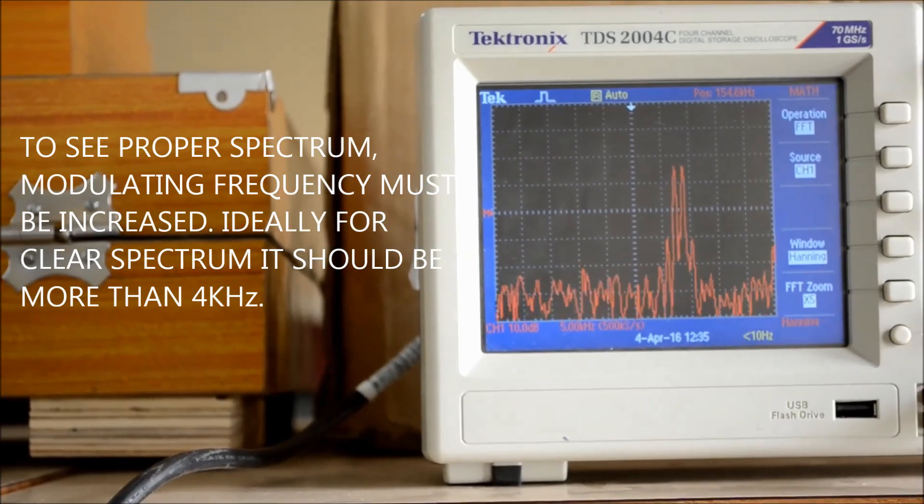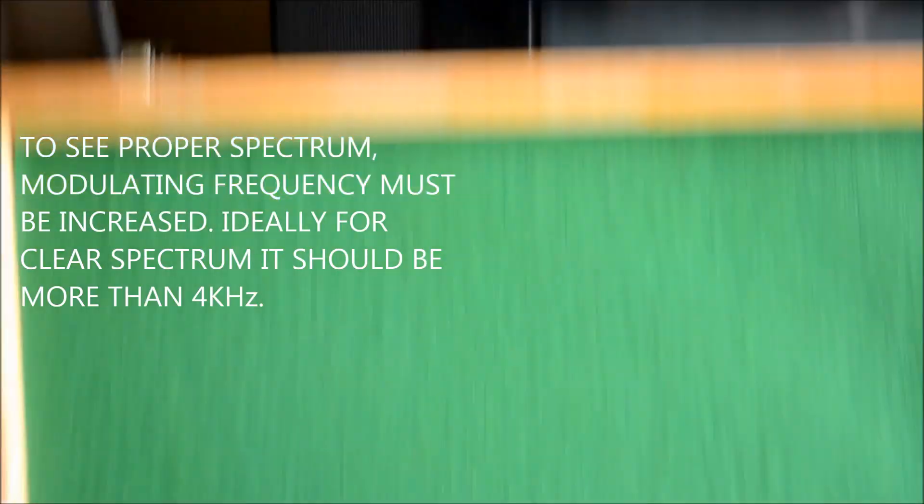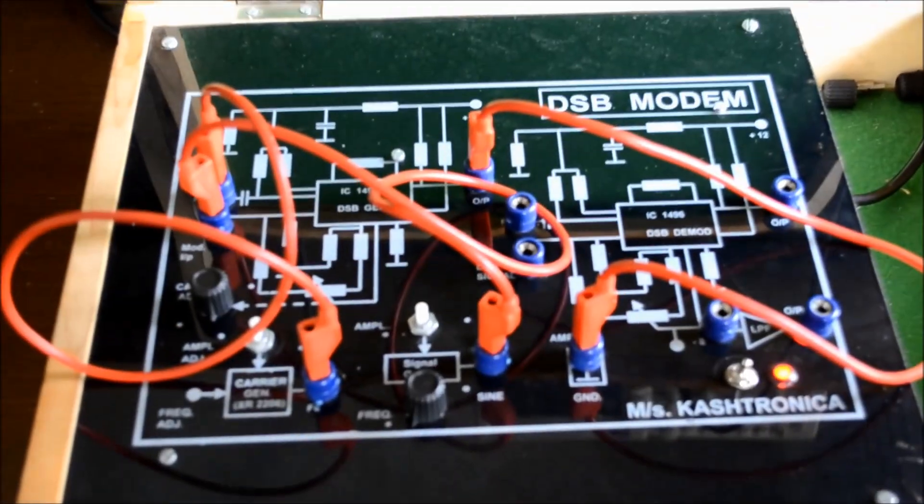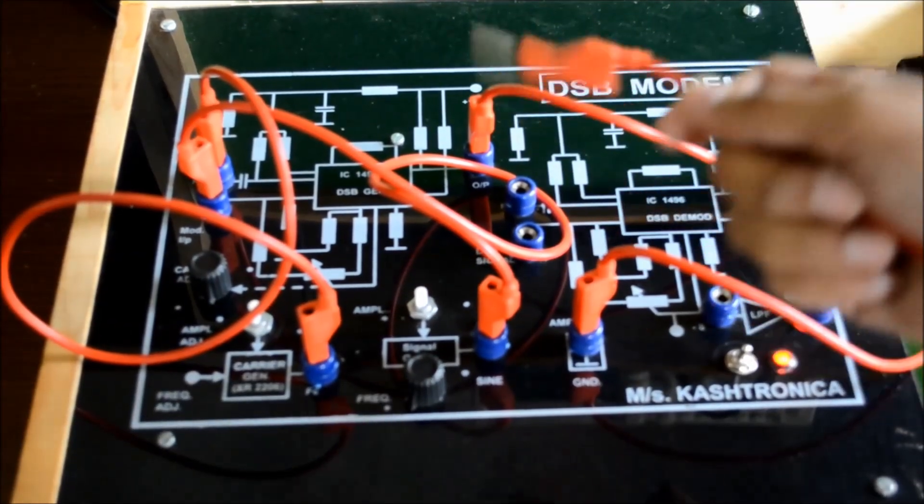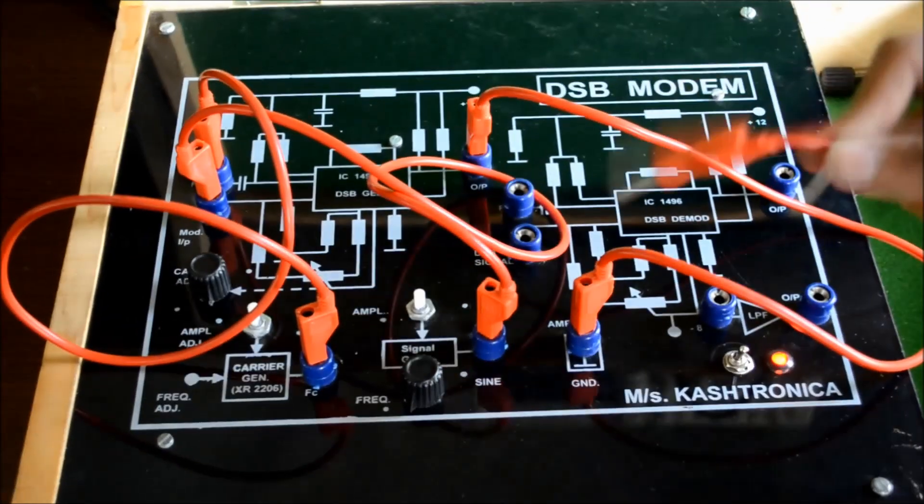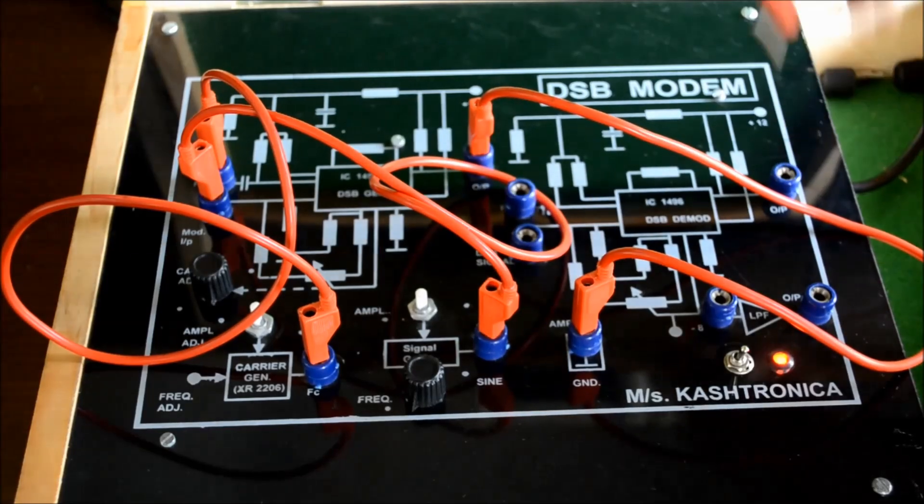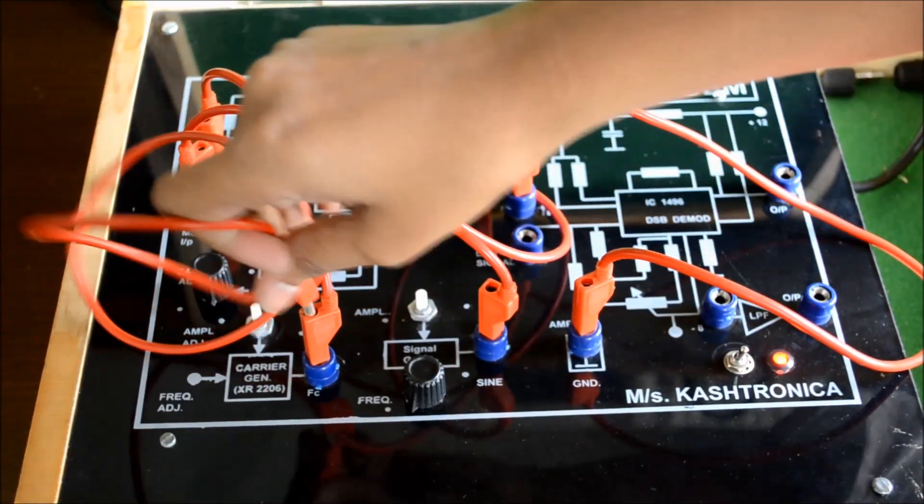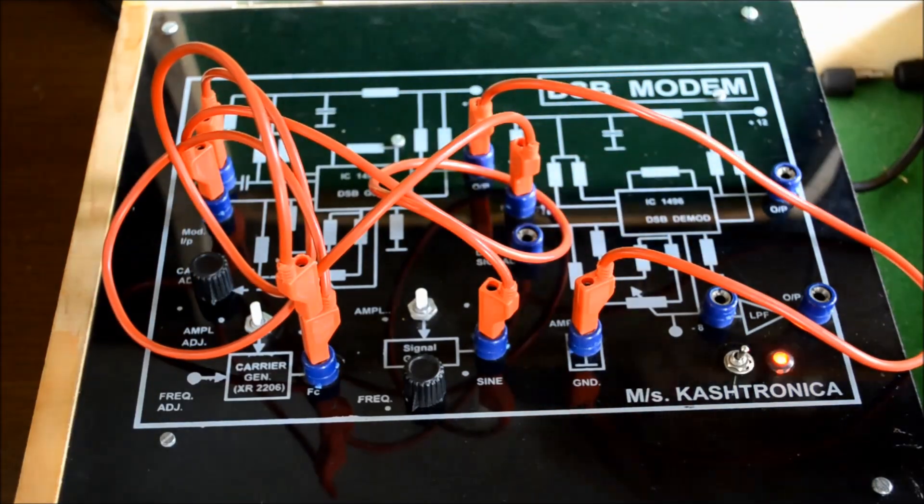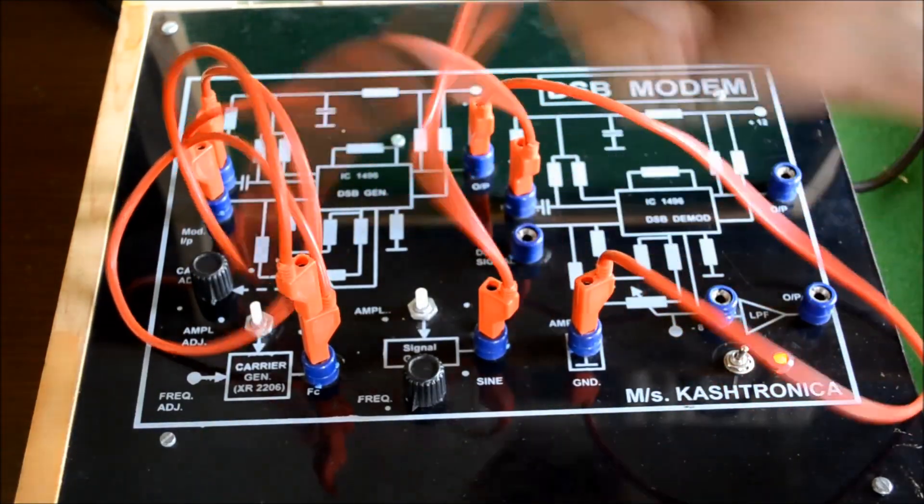Now for demodulation, we are using synchronous detection. Whatever carrier is used for the modulation purpose, the same will be used for demodulation. So we are giving the carrier frequency the same, and the DSB-SC generated signal is given to the input of the detector.